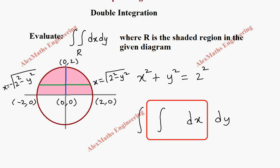So let's write the limit here: -√(4-y²) to √(4-y²), into dy, and the outer integral from 0 to 2.